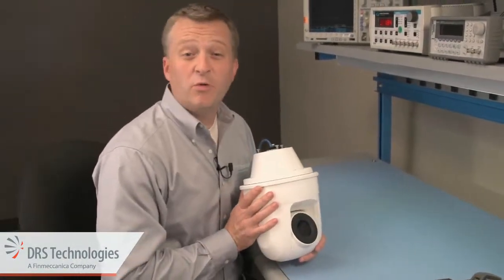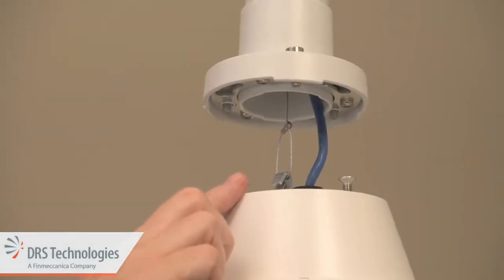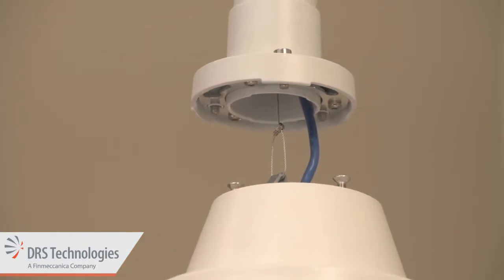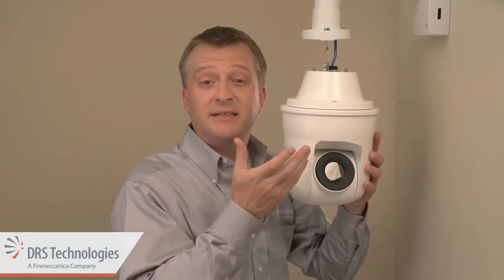Now let's move over to our wall mount. First, hook the camera to the strain relief wire on the mount. This will take the weight of the camera. Then, line up the three screw heads in the top hat to the holes in the mount. Lift the camera and rotate it to the right until it clicks into place.